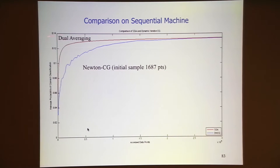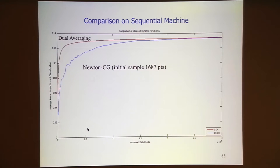The dual averaging method on a sequential machine still wins. We have stochastic methods and batch methods, and stochastic methods are really well tuned—they work so well. Both start really, really fast, but somehow the stochastic method is able to do more productive work. On this logistic speech recognition problem, it beats the Newton-CG method. We would give up here, except that from the very beginning the reason we looked at second-order methods is because they have the opportunity for parallelism. These are results on a sequential machine.